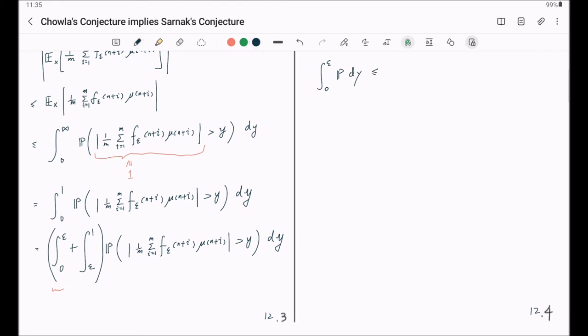This can be trivially bounded because this probability is always bounded by 1 and the range is just from 0 to epsilon. So this is trivially bounded by 1 times epsilon. And the second part, noticing that this is when y is at least epsilon. And this probability will decrease when y increases. So this guy will be bounded by epsilon.